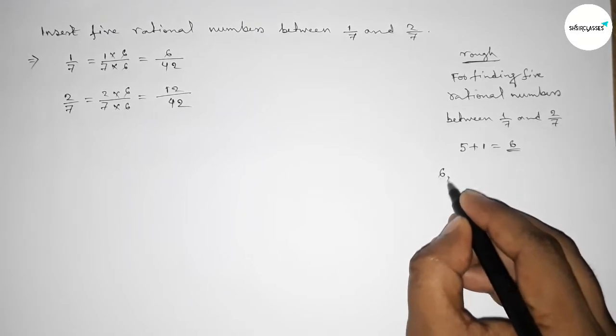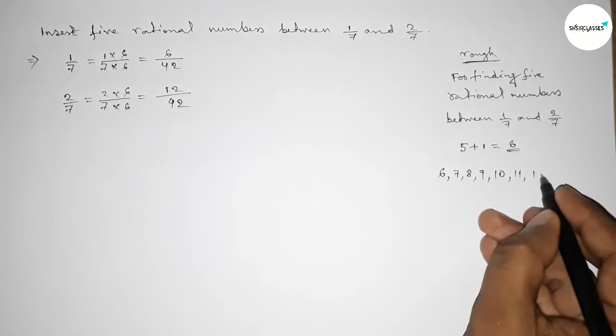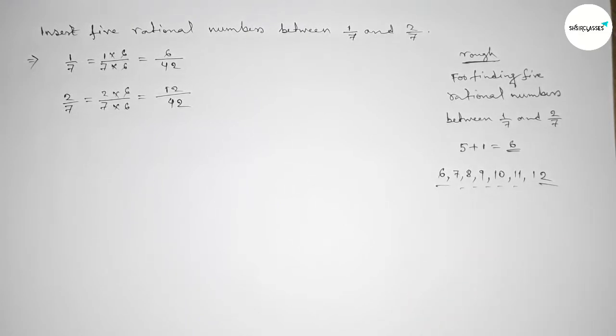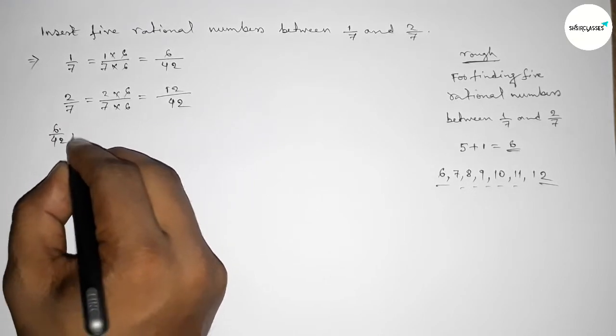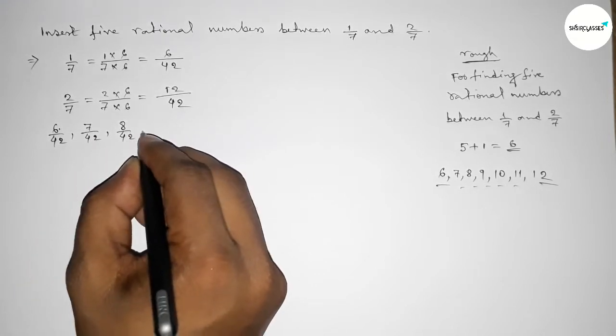Now between 6 to 12 we can get 5 natural numbers, and by these numbers we can form rational numbers. So now let's write down all the rational numbers.